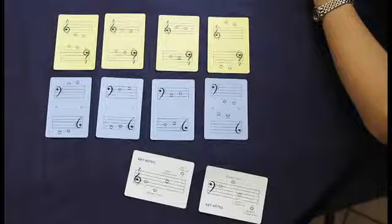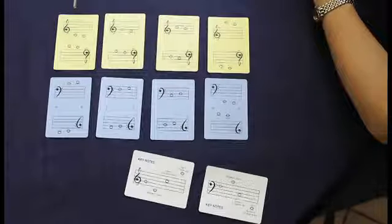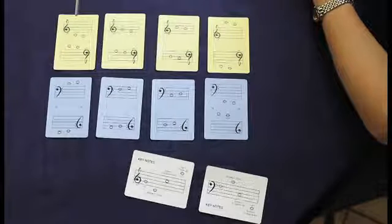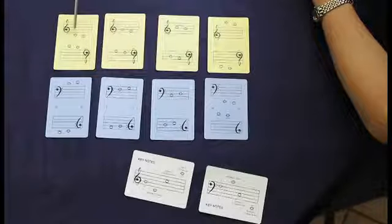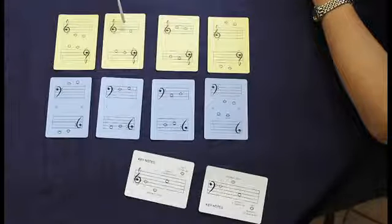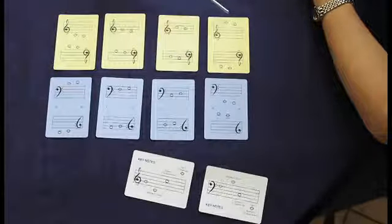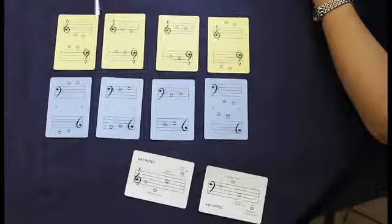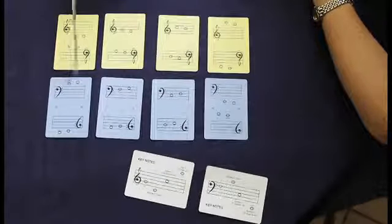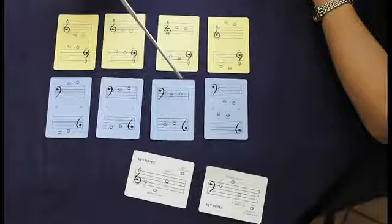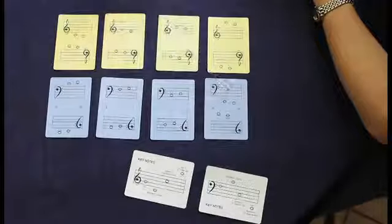For example, the treble clef cards are yellow: a second on middle C, a second on G, a second on upper C, and a second on top C. In the bass clef, blue cards are a second on middle C, F, lower C, bottom C.